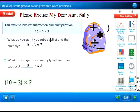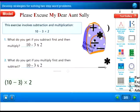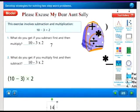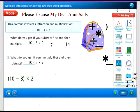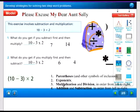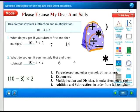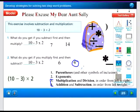This exercise involves subtraction and multiplication. What do you get if you subtract first and then multiply? If we subtracted first, 10 minus 3 equals 7, and 7 times 2 equals 14. Now, what if you multiply first and then subtract? 3 times 2 is 6, and 10 minus 6 equals 4. Which is correct? Following order of operations — parentheses first, then multiplication and division, then adding and subtracting — we multiply first then subtract. So the correct answer is 4.